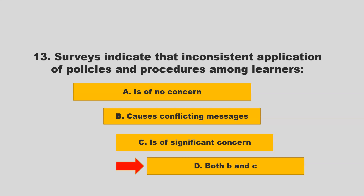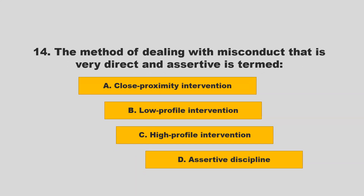Surveys indicate that inconsistent application of policies and procedures among learners causes conflicting messages and is of significant concern — both B and C. If you chose D, both B and C, you are correct.